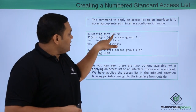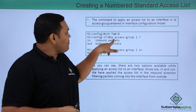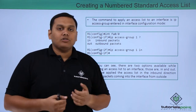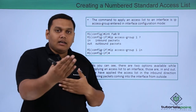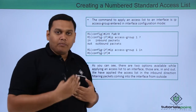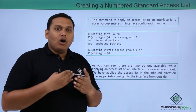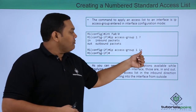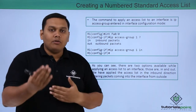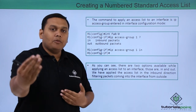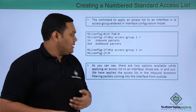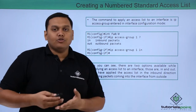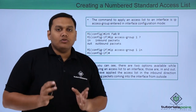Entering interface configuration mode, we apply 'ip access-group 1 in' to handle inbound and outbound packets — specifying whether packets are coming into or going out of the interface. Here, we set it as inbound for packets coming from Bob or Max.